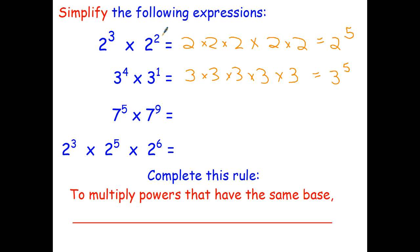And that's because we really have 3 twos multiplied together, 2 twos multiplied together. Altogether we have 5 twos multiplied together. Here we have 4 threes multiplied and 1 three. Total of 5 threes multiplied together.